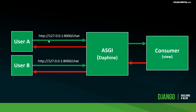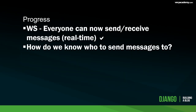User A goes to our chat room, which sets up WebSockets and starts a WebSocket session between the user and our back-end. We send a message that goes to the consumer in Django, which then sends it out to all the other users. Everyone can now send messages in real time using WebSockets, but we're using chat rooms — there will be multiple rooms, so how do we know who to send a message to?